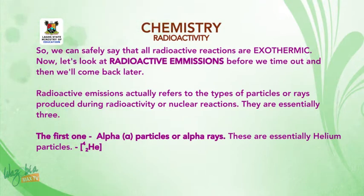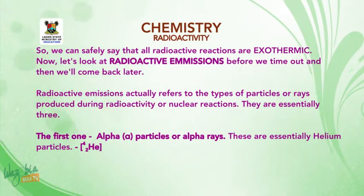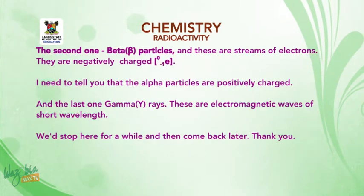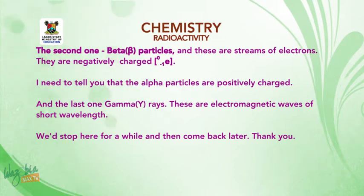Radioactive emissions refers to the types of particles or rays produced during radioactive or nuclear reactions. There are essentially three. The first one: alpha particles or alpha rays — these are essentially helium particles and are positively charged. The second one: beta particles — these are streams of electrons and are negatively charged.